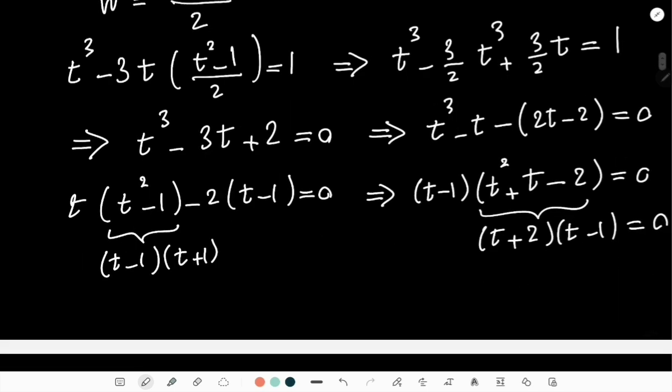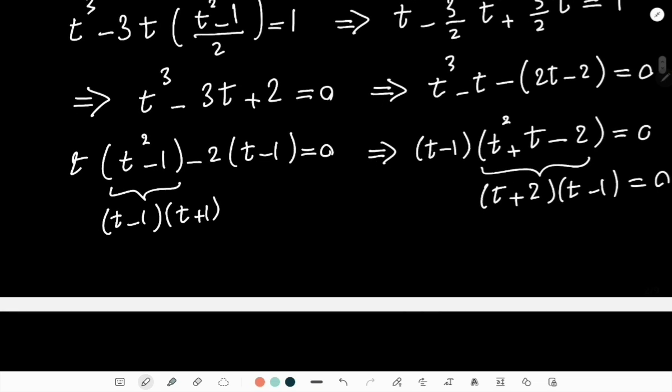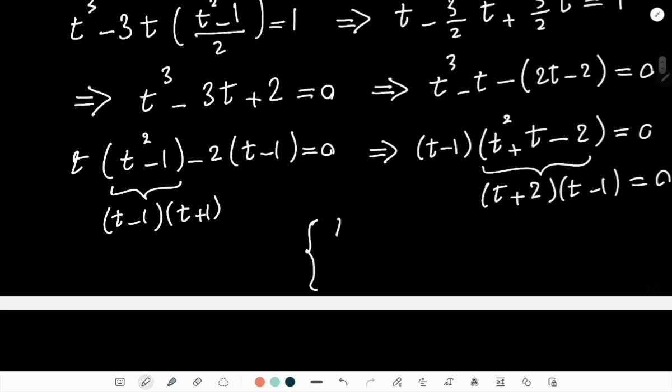I think that is equal to 0. So we have two repetitive answers. So basically, t₁ and t₂ are both 1. And then t₃ = -2.